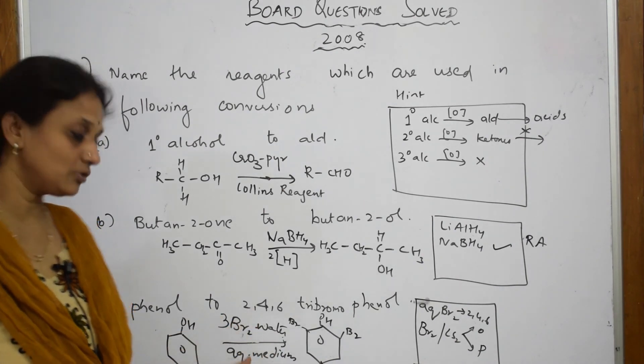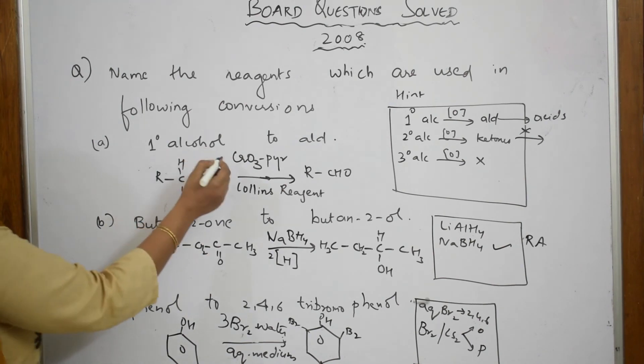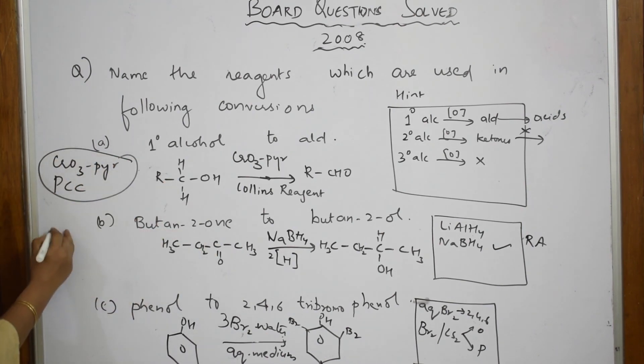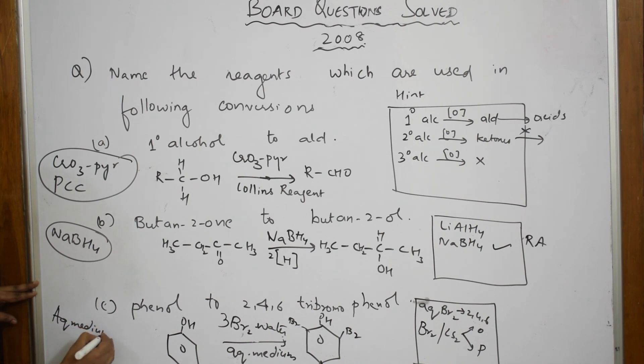For this, this is your reagent: CrO3 in the presence of pyridine, or you can also use PCC. For this particular thing, specifically writing sodium borohydride. For this, aqueous medium or you can just write bromine water - this is your reagent.